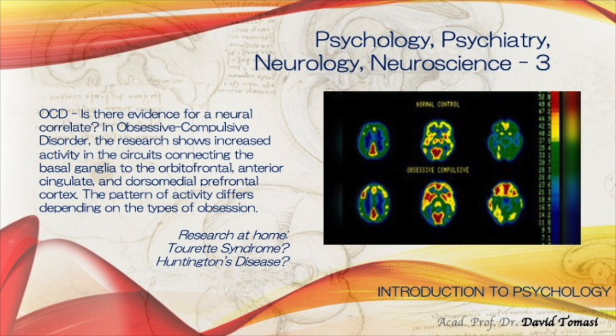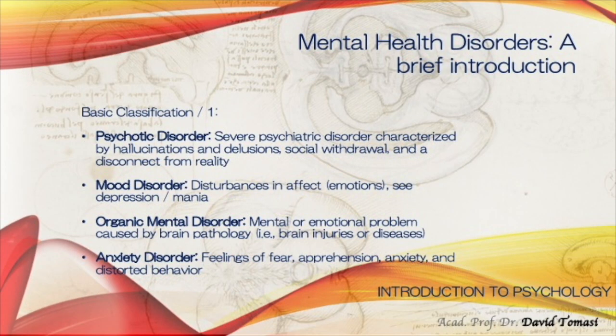Here is a very brief classification of psychological disorders to start our conversation. Psychotic disorders are severe psychiatric disorders characterized by hallucinations, illusions, social withdrawal, and a disconnect from reality. Mood disorders involve disturbances in affect and emotions — see depression and mania. Organic mental disorders are mental or emotional problems caused by brain pathology, brain injuries, or diseases. Anxiety disorders involve feelings of fear, apprehension, anxiety, and distorted behavior.